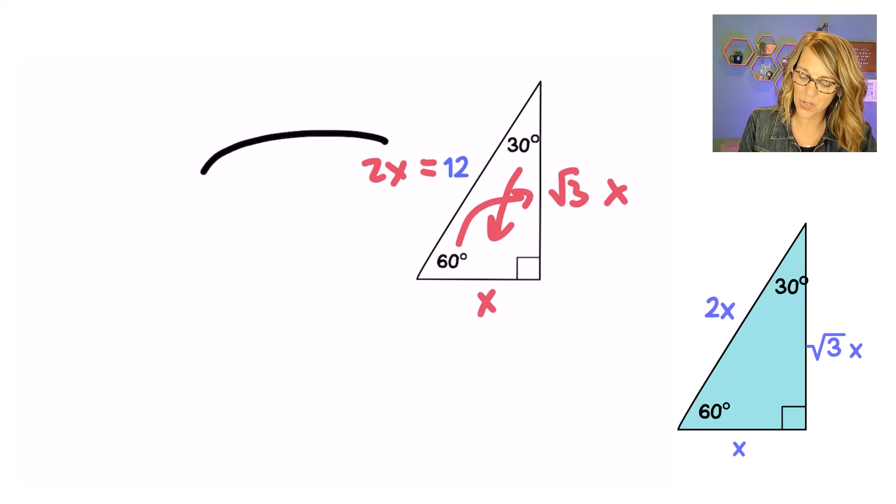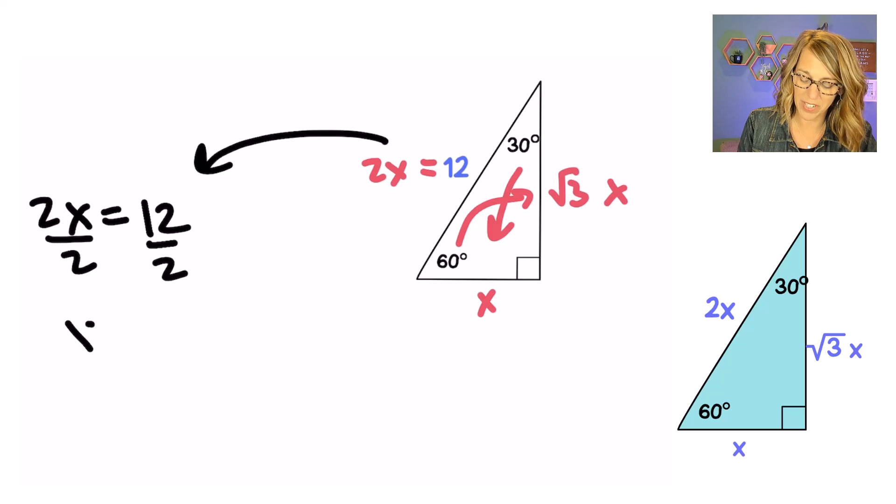Let's go ahead and pick up that 2x equals 12 and that's going to find x for me. So if 2x is equal to 12 and I divide by 2 that means that x is equal to 6.